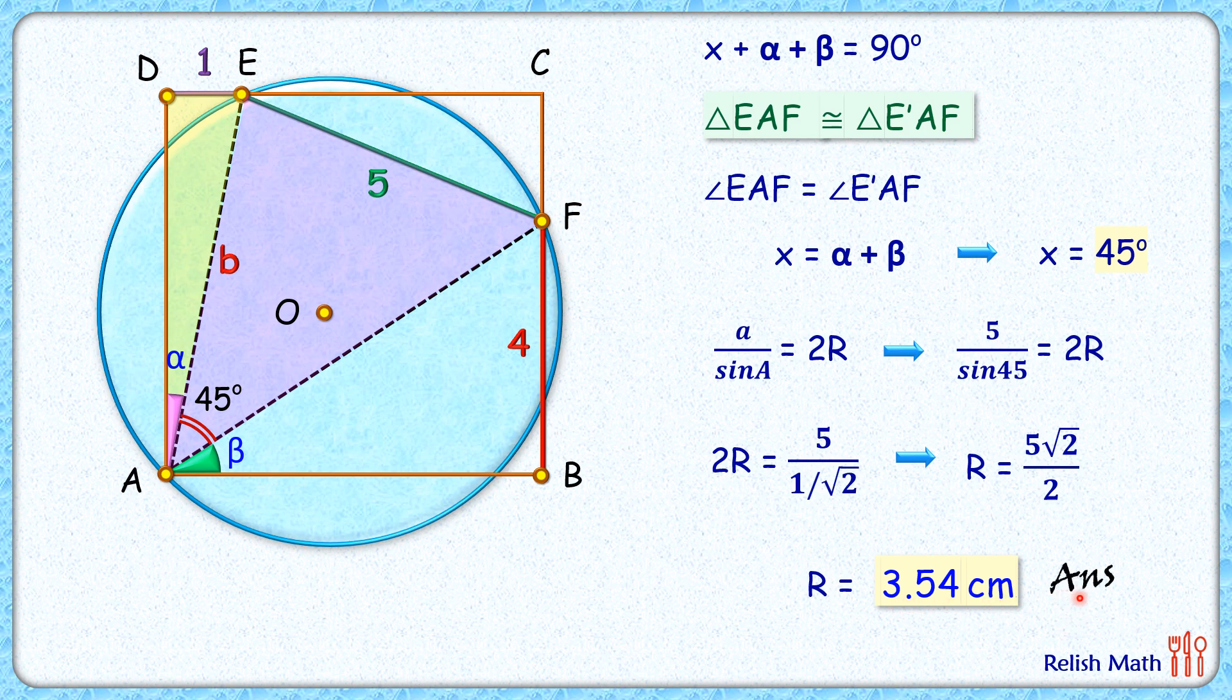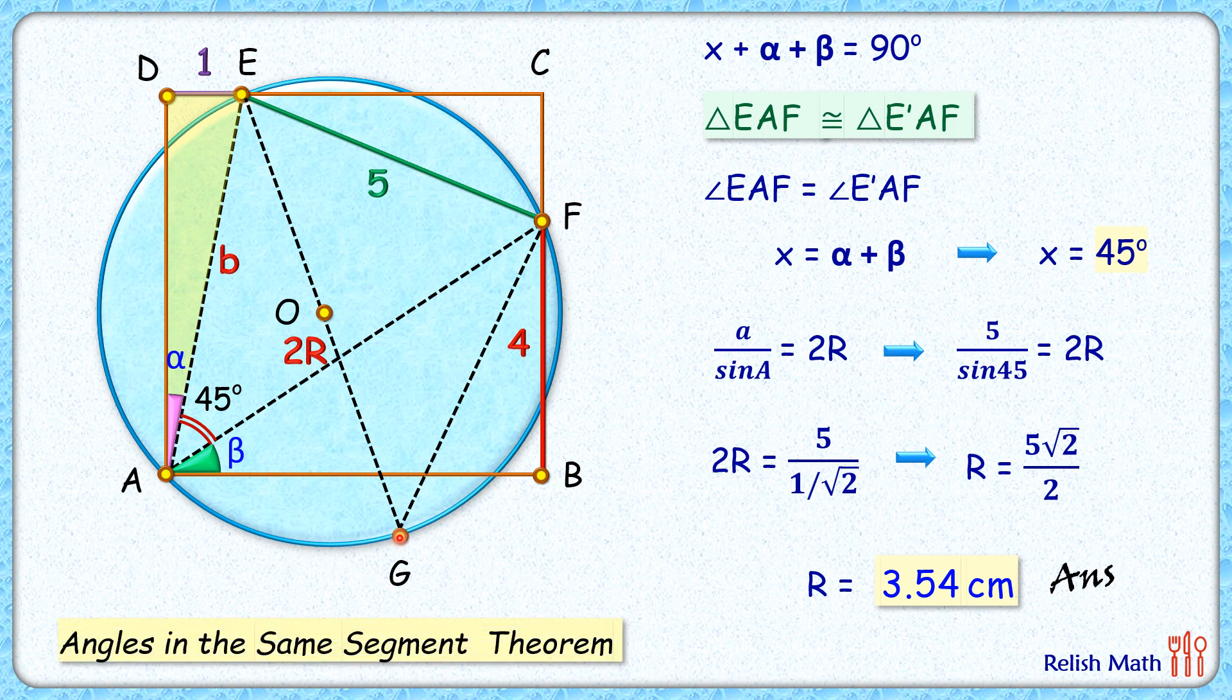Now let's see if we are not comfortable applying this extended sine rule. For that, let's draw a diameter here and join FG also. Now by angles in the same segment theorem, this angle here will be the same as 45 degrees.